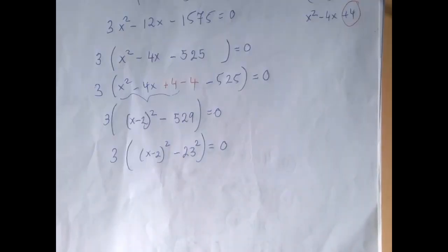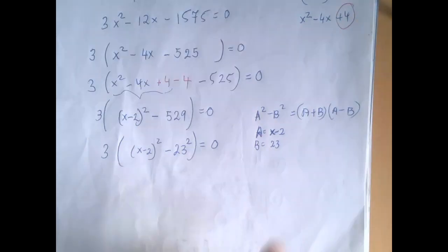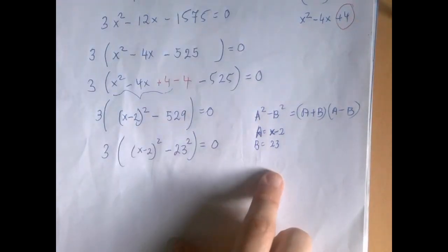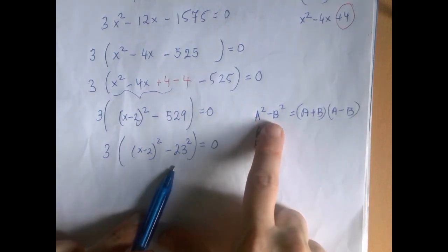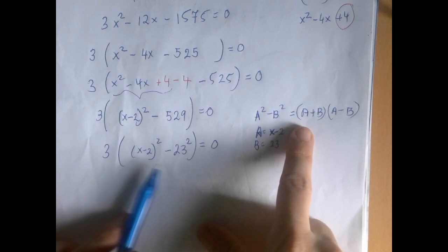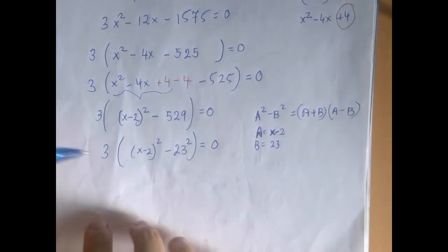So now we're going to factor via the difference of squares theorem. A will be played by x minus 2, B will be played by 23. And then x minus 2 squared minus 23 squared can be factored as x minus 2 plus 23, x minus 2 minus 23. So let's do that.